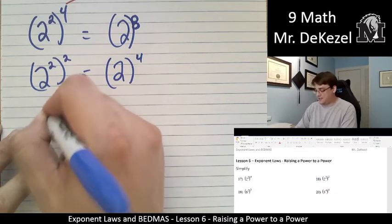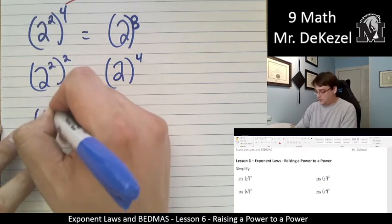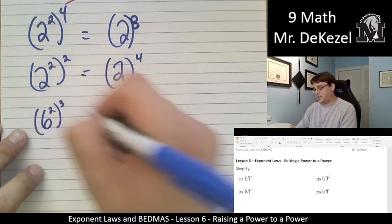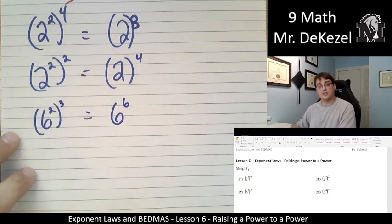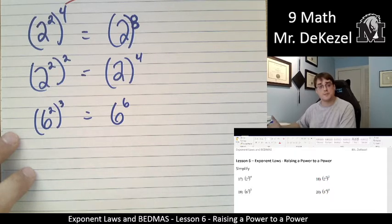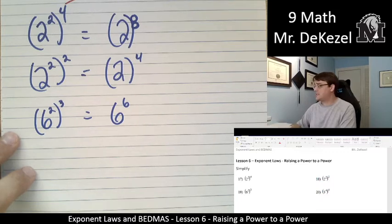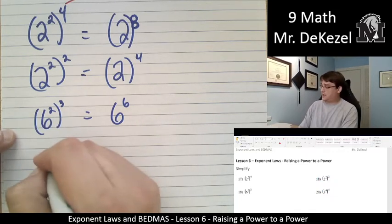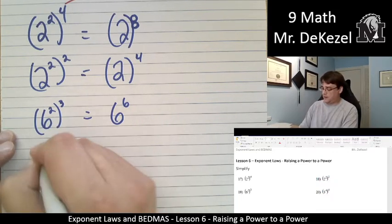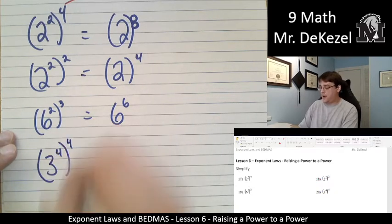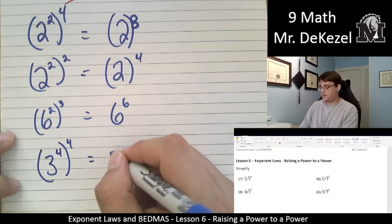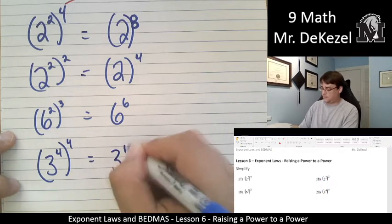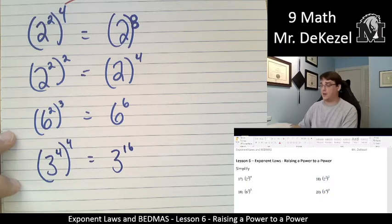We have next, 6 squared to the power of 3. 2 times 3 is 6. That's 6 to the power of 6. You do not need to solve these. We are simply making them as simple as possible, simplifying them. Next one is 3 raised to the power of 4, and then all raised to the power of 4. We are multiplying an exponent of an exponent. So that is 16. 3 to the power of 16.